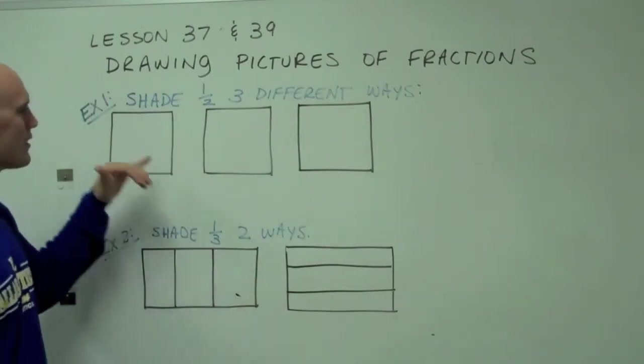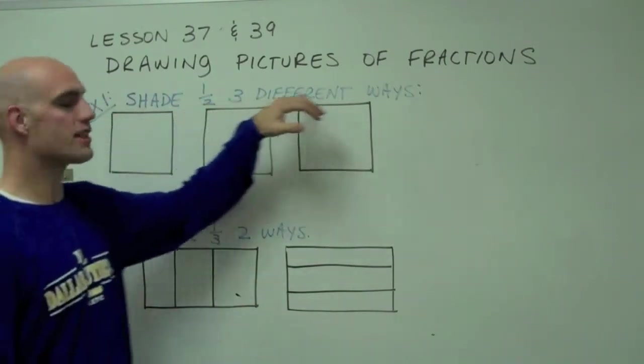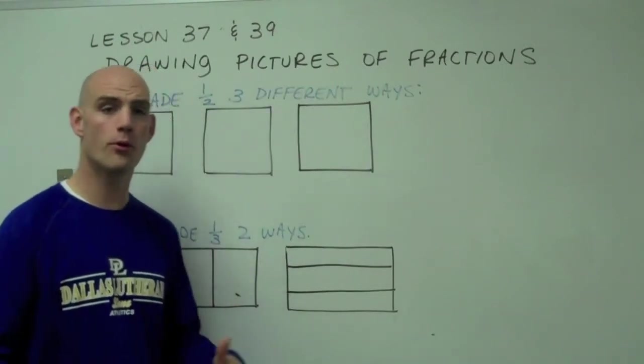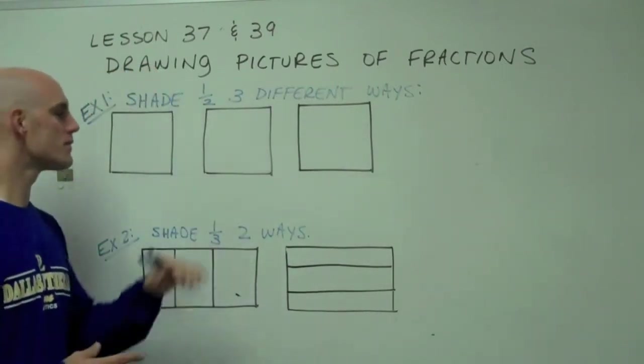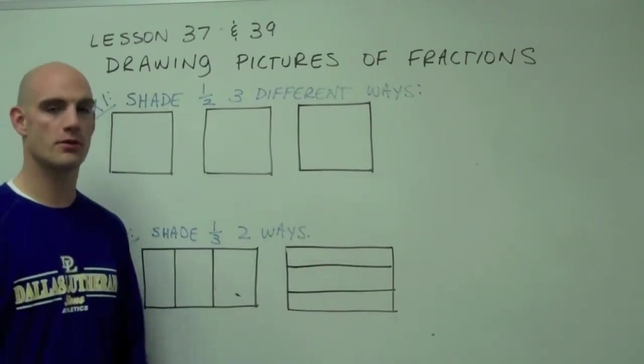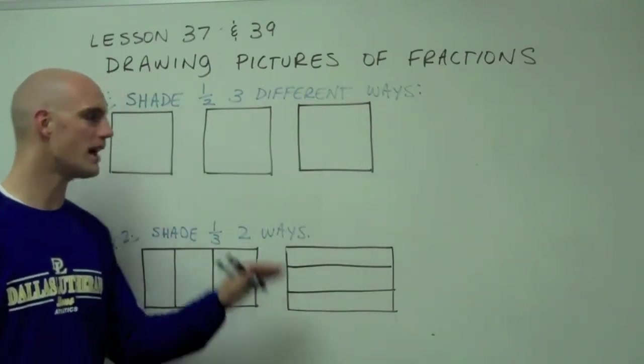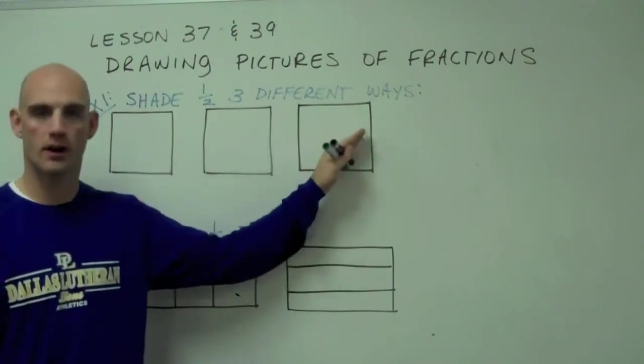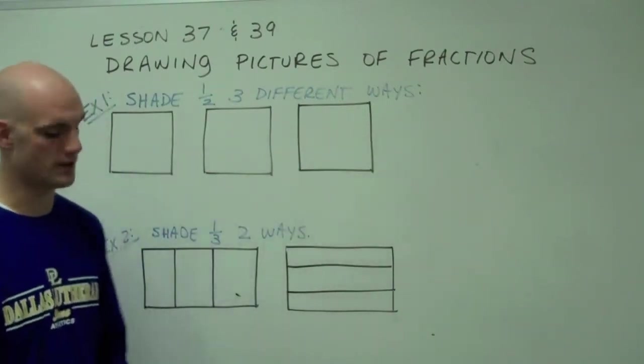First of all, let's learn how to shade one half in three different ways. Important things to remember about this skill: We need to make sure that all of our shapes are going to be the same size. Another thing we need to remember is that we always have to divide it exactly into equal parts. I'll show you a couple ways to do this.